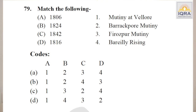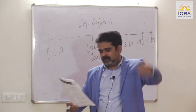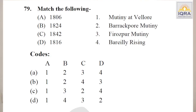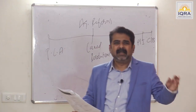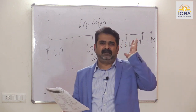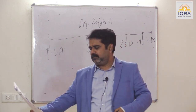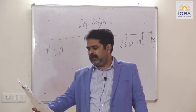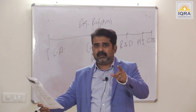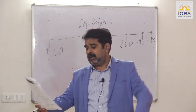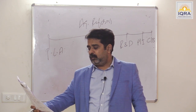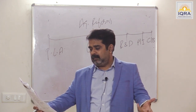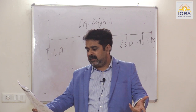1857 was not the first revolt — there were a series of revolts. Answer is A. V.D. Savarkar said 'first war of independence,' but it was neither the first nor a war of independence. White Mutiny — religious symbols was the issue. Soldiers were not ready to cross the sea during the Burma War. Answer is A.